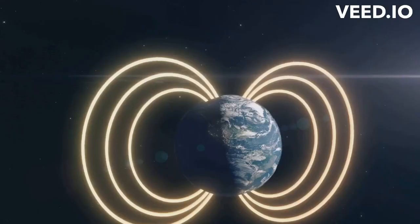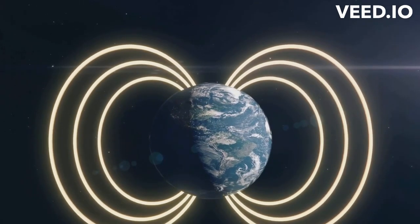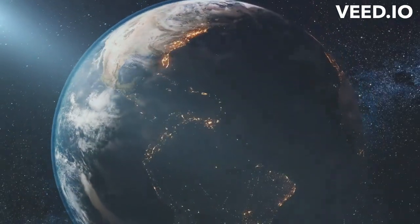But the changes wouldn't stop there. Earth's spin generates our magnetic field, a protective shield that prevents harmful cosmic radiation from reaching the surface.